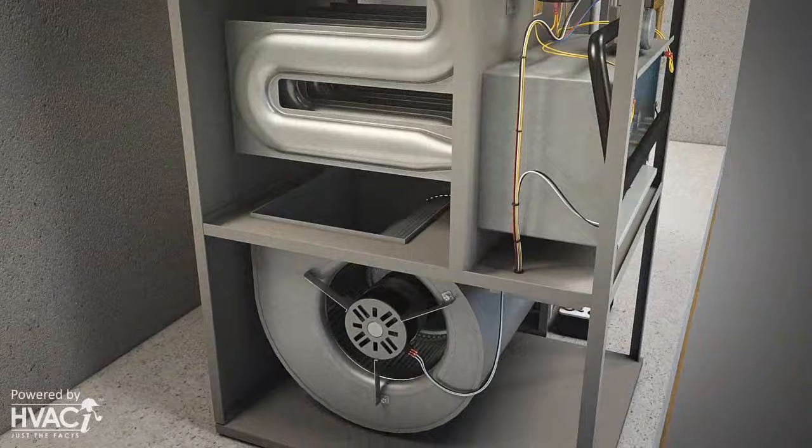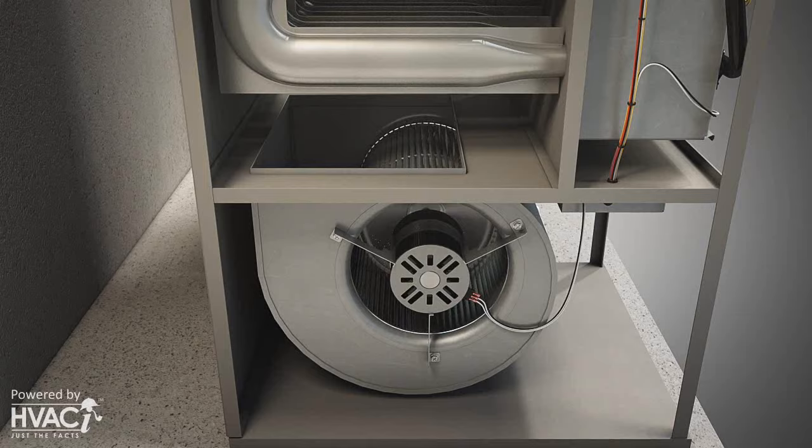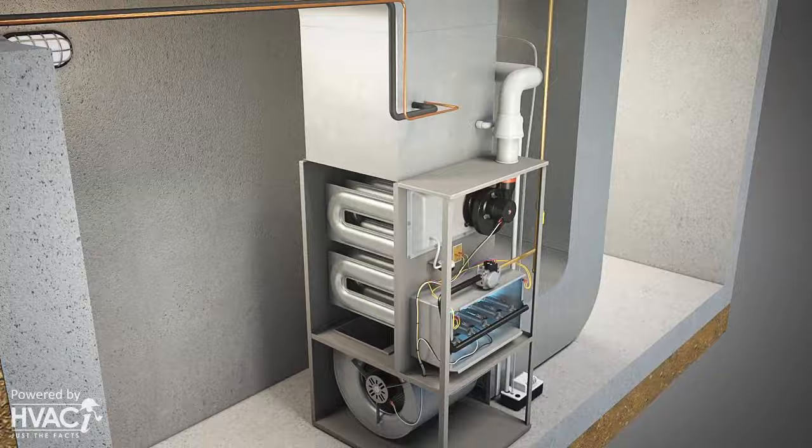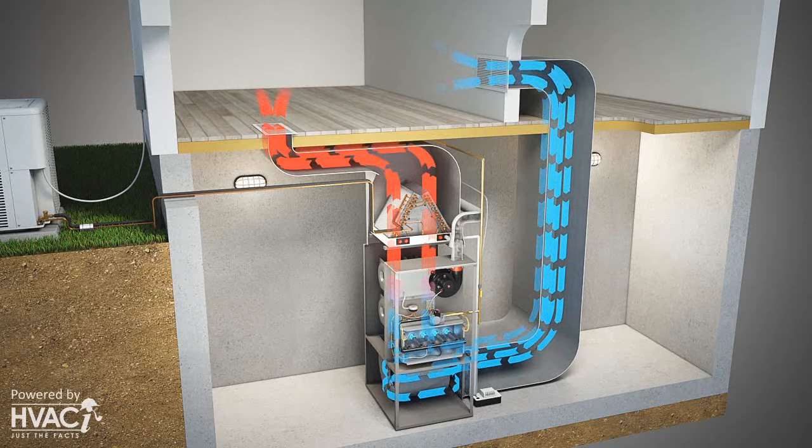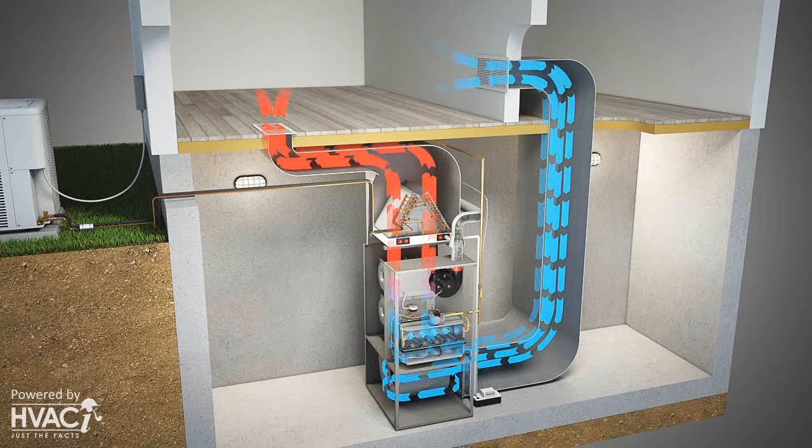As the blower motor begins to turn, it removes cool air from the home through the return registers and blows that air across the heat exchanger tubes. As the air passes through the heat exchanger, the heat transfers to the passing air and then is distributed via the supply ductwork and registers to the inside of the home until the temperature set at the thermostat has been satisfied.